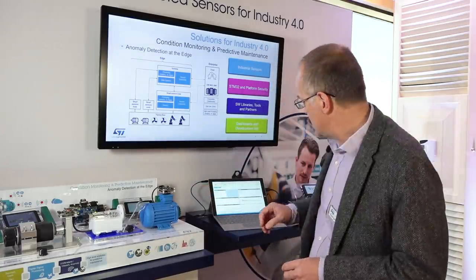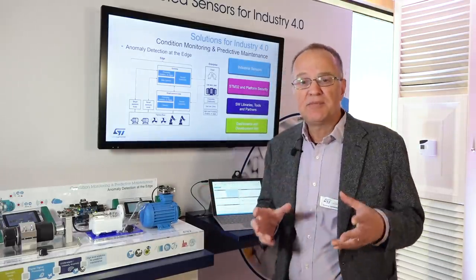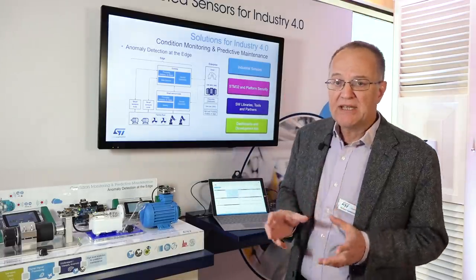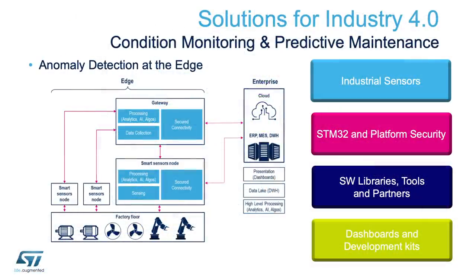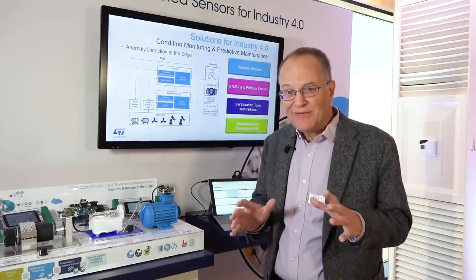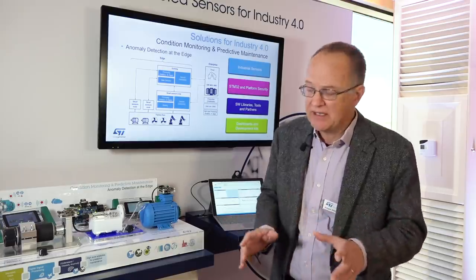A key concept we want to show at this demo stage is the concept of a smart sensor node, which is a node — a little board that concentrates processing, sensing, and connectivity features and capabilities. It is a smart node because it must adapt to the different system requirements which will change from case to case in a production factory.